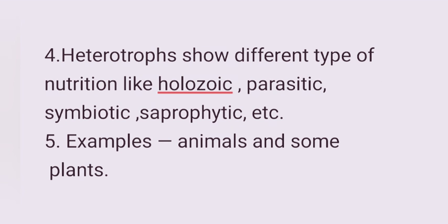Fourth, heterotrophs show different types of nutrition like holozoic, parasitic, symbiotic, saprophytic, etc. Examples include animals and some plants.